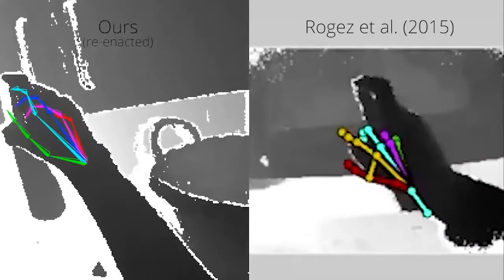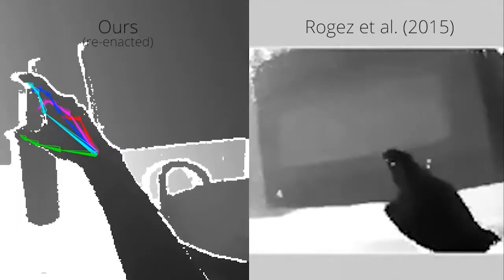Our method also performs well in scenes similar to the ones shown by Rougas and colleagues. The method exhibits a sliding effect since it was not designed specifically for egocentric settings. However, our method runs in real-time and produces temporally smooth tracking results.